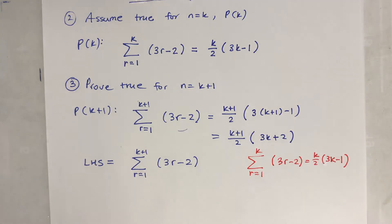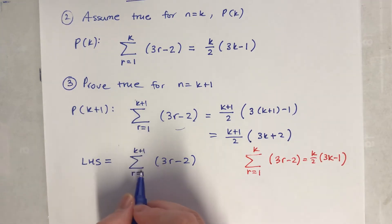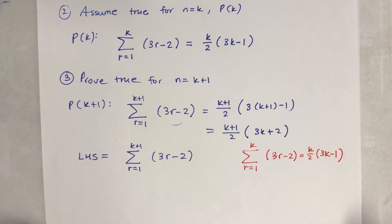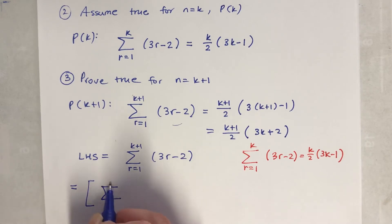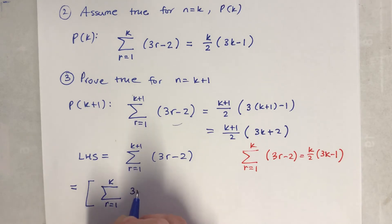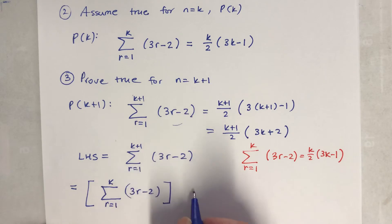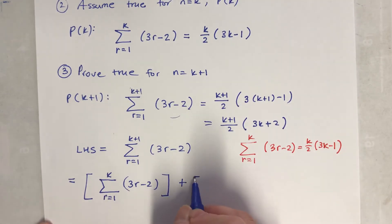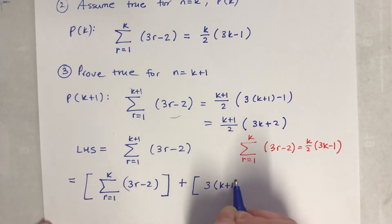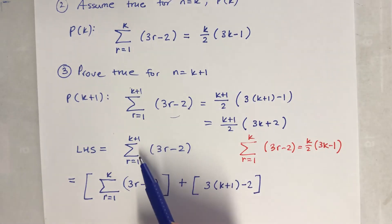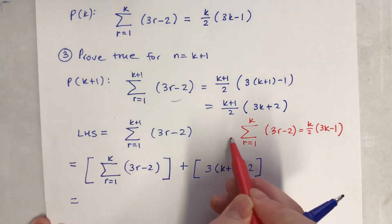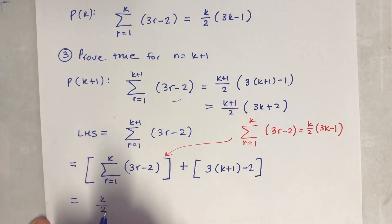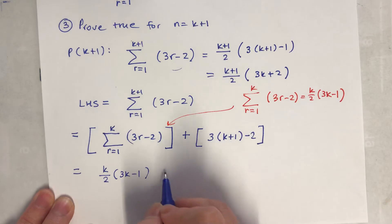For the left hand side, I separate the sigma up to k plus one extra term. So it becomes the sigma up to k, plus the next term. I can replace the sigma up to k using step 2, which is k(3k-1) over 2, and then add the extra term 3(k+1) minus 2, which equals 3k plus 1.